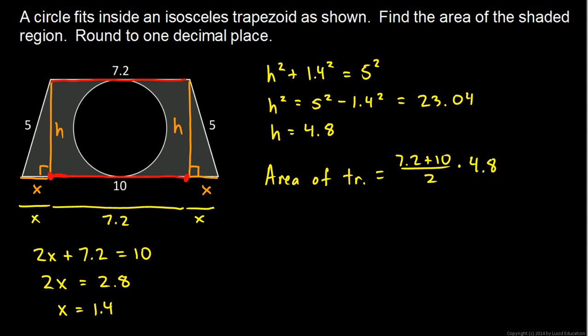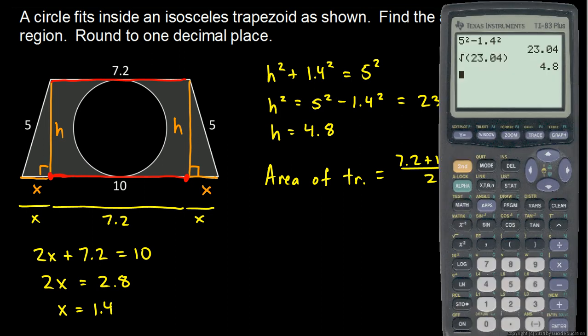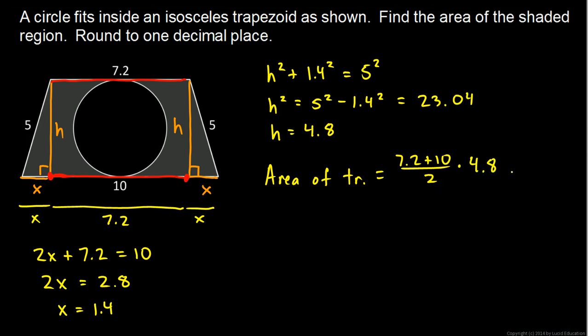And so we work that out. 7.2 plus 10 divided by 2 times 4.8. I got 41.28 for the area of the trapezoid.